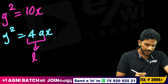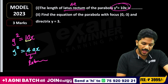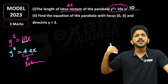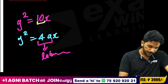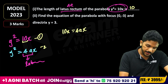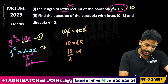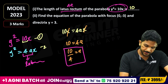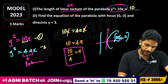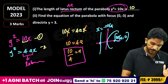The length of the latus rectum is 4a, and since 4a = 10, the latus rectum length is 10. Since the coefficient of x is positive, this is a C-shape. Focus is at (10/4, 0) and the directrix is x = -10/4.